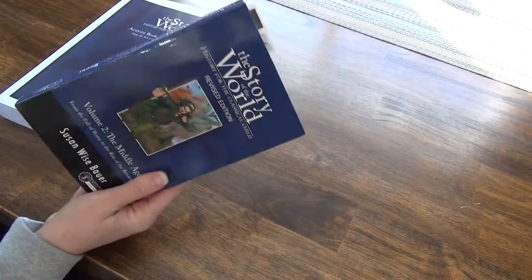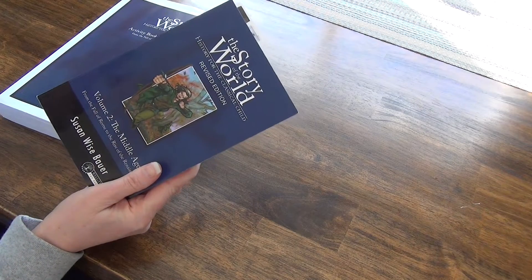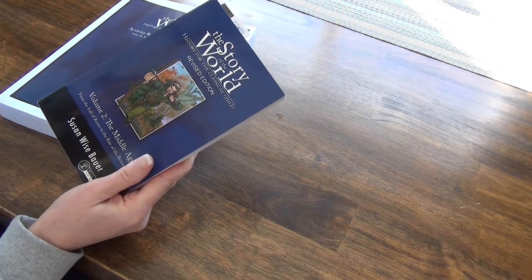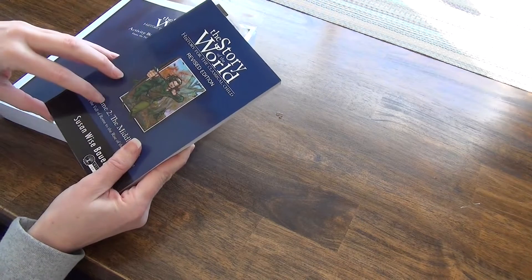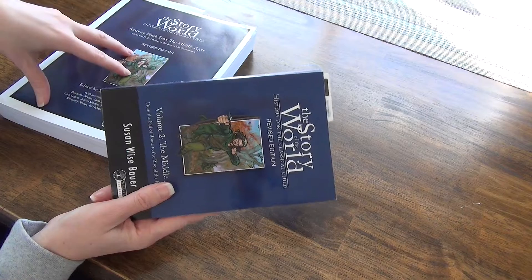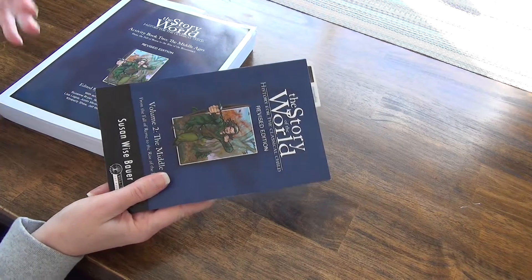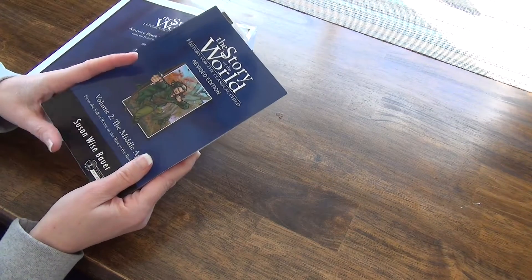So we have quite a ways to go still in this. We only do history once, sometimes twice a week, and so it does go slower, but I'm fine with that. I originally didn't get the activity book because I didn't feel like we used it very much with Story of the World 1.